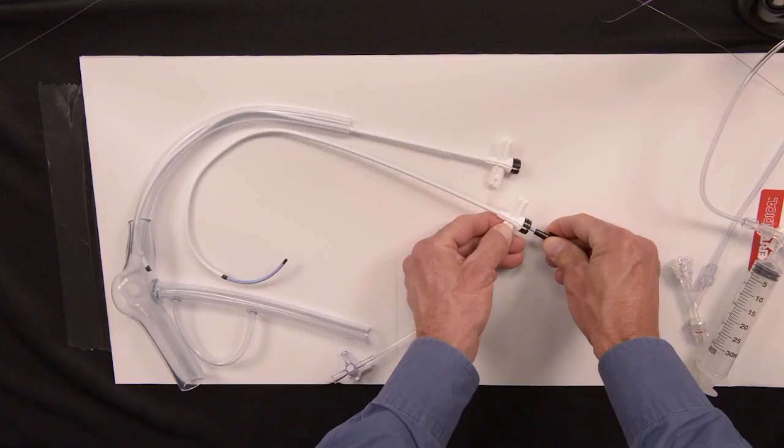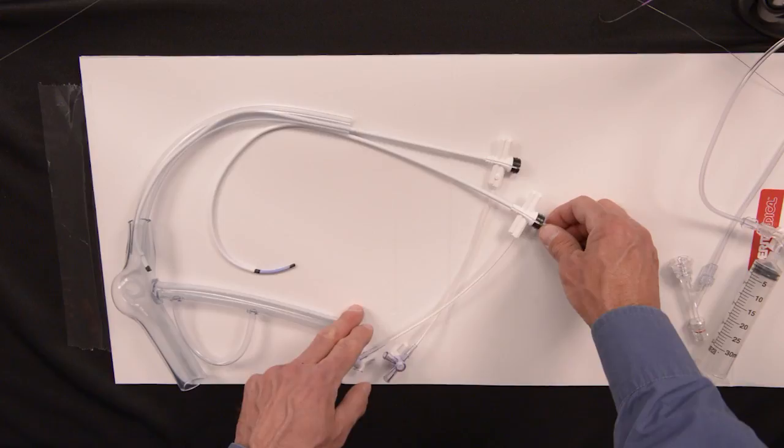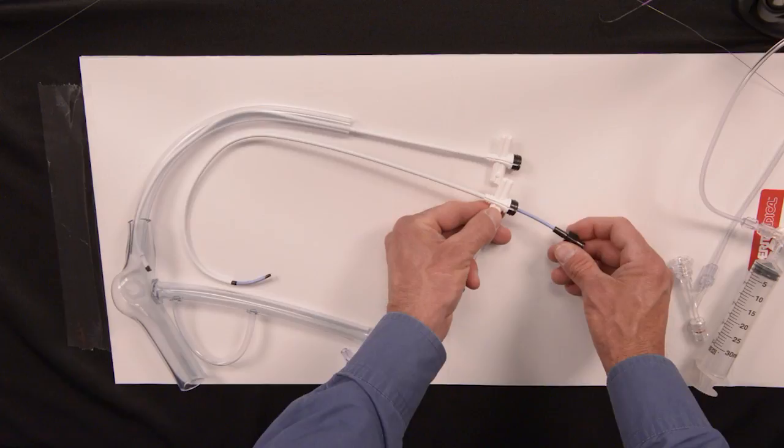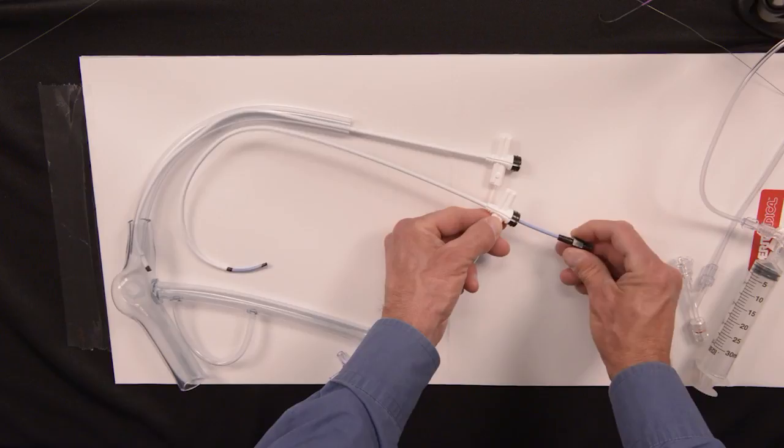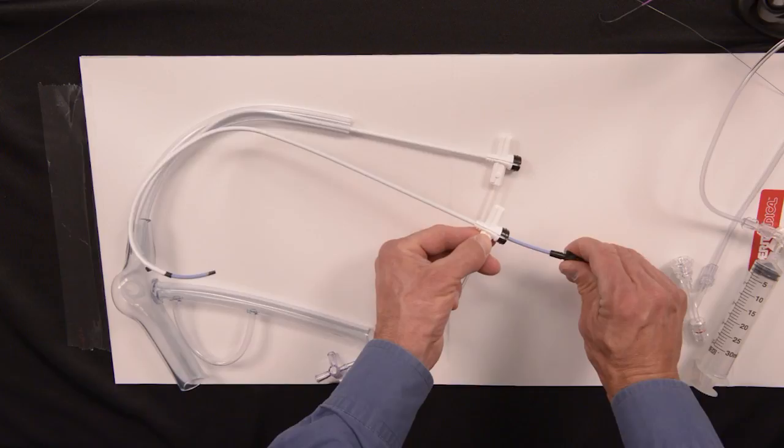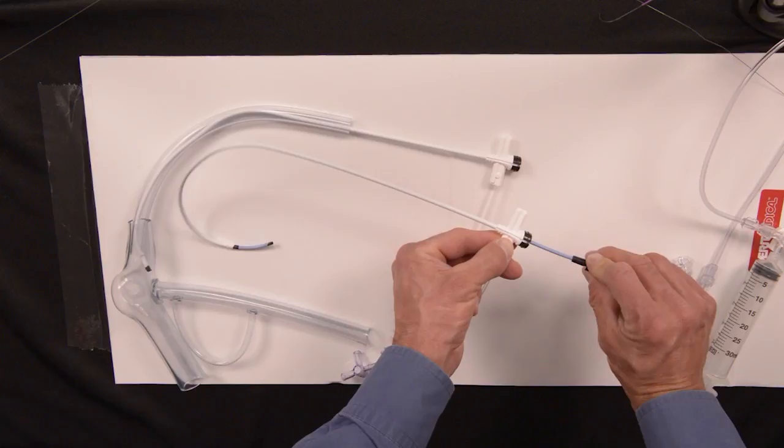The coronary sinus is a posterior vessel and goes backwards, so typically we're going to be using counterclockwise torque to cannulate once we get the braided core into the right atrium. As I turn this with my fingers counterclockwise it goes posterior; if I go clockwise it rotates to the anterior where we're typically not going.